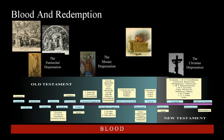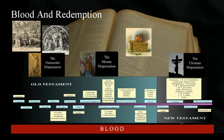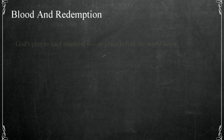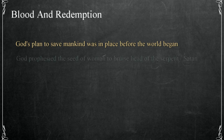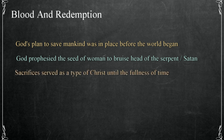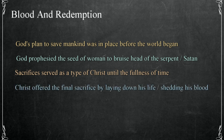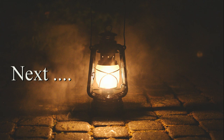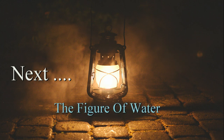Blood leaves a trail that begins with the first sacrifices and leads to the death of Christ; by this, the faithful of all ages are linked to the sacrifice of Christ in God's plan to redeem mankind. The spiritual representation of salvation by the shedding of blood serves to unify the Bible as a whole rather than a group of disorganized texts. God's plan to save mankind was in place before the world was created; God prophesied that the seed of woman would bruise the head of the serpent Satan; sacrifices served as a type of Christ until the fullness of time; Christ offered the final sacrifice for sin by laying down his life. In the next video I'll discuss the figure of water and the role it plays in God's plan to save mankind.